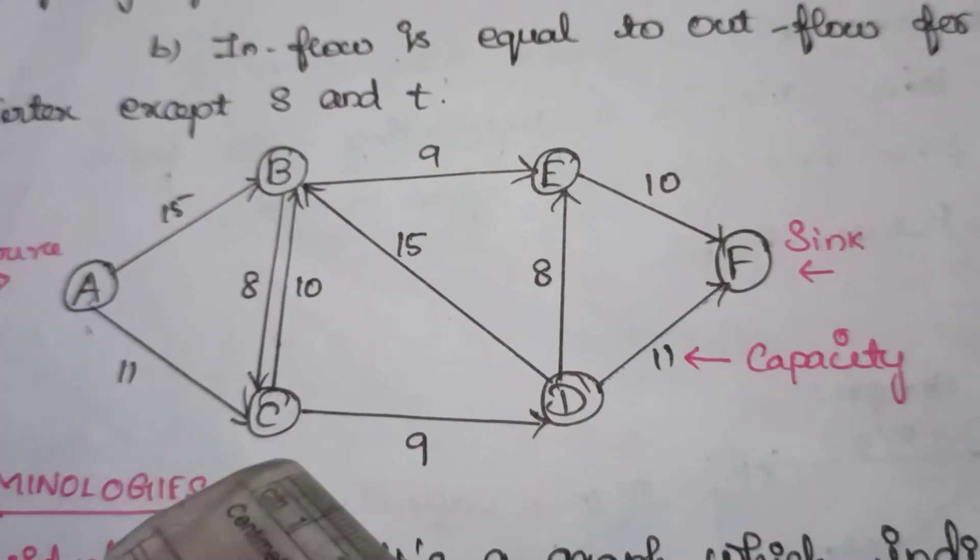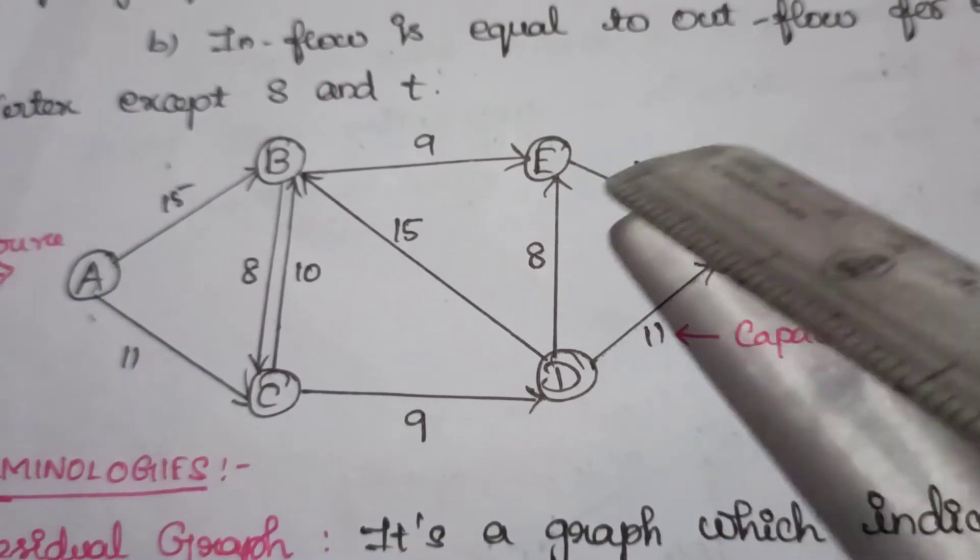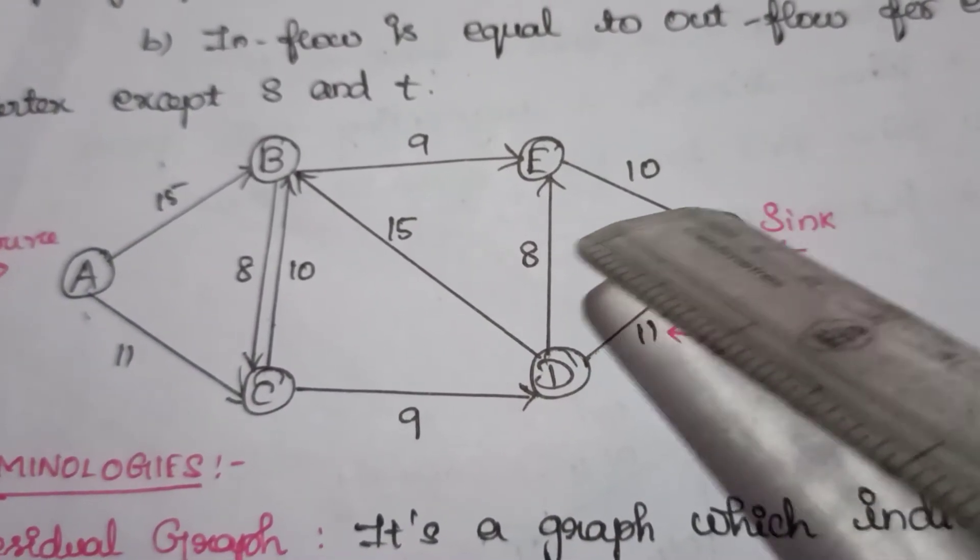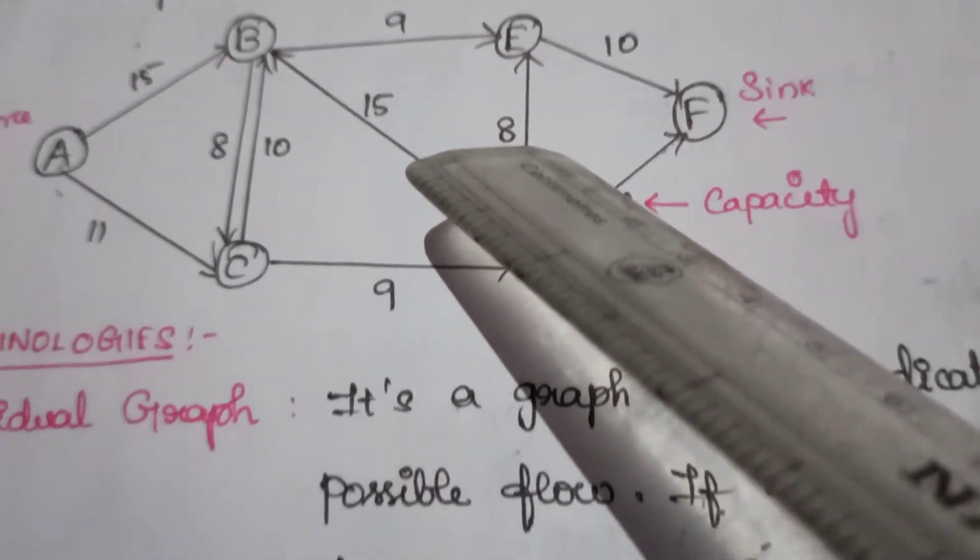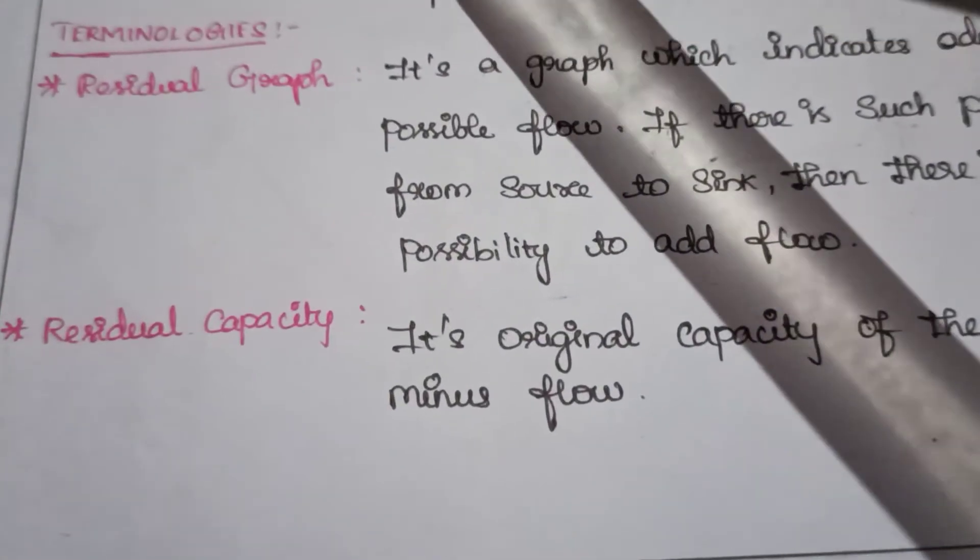When we get multiple possibilities to reach the terminal point, then it should be looked at as a residual graph.